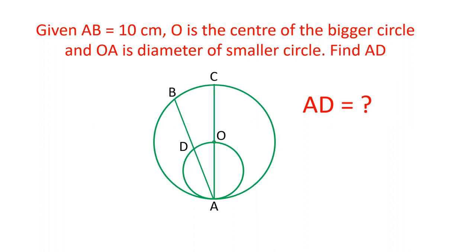Friends, in today's video, there are two circles. O is the center of the circle, AO is diameter of the small circle. The length of AB is given as 10 centimeters. We will find out the value of AD. Let's see how we will solve this question.